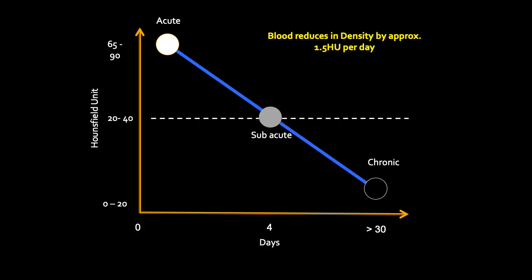Radiologically, if you have an acute bleed you will lose 1.5 Hounsfield units of density per day from the day of the bleed. An acute bleed is going to be anywhere between 65 and 90 Hounsfield units, because it is primarily concentrated with red blood cells only, and hemoglobin — which is a metal — attached to those cells means non-moving metal appears dense.